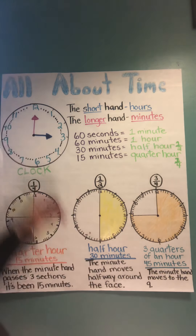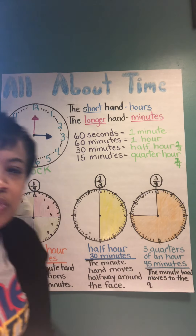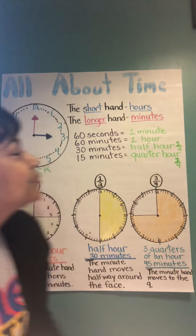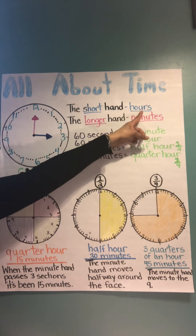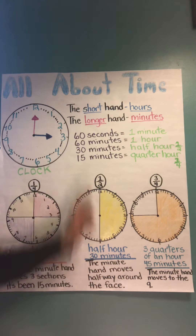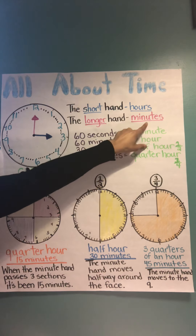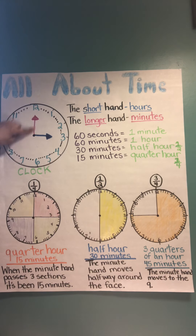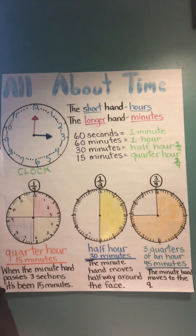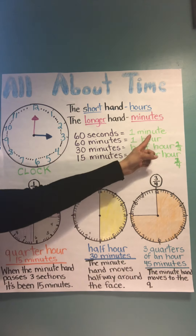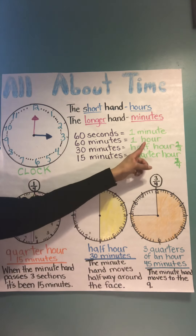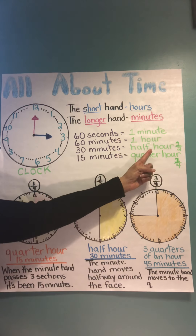So let's begin. It says 'All About Time.' I just want to review some important points with you. First, it says the short hand gives the hours. I put that in blue because the short hand is pointing to the 3, so it's at the 3 o'clock hour. Then it says the longer hand is the minutes — that's in pink. Here's the long hand pointing directly at the 12, which means the 3 o'clock hour just began. 60 seconds equals a minute, 60 minutes equals an hour, 30 minutes equals one half hour.